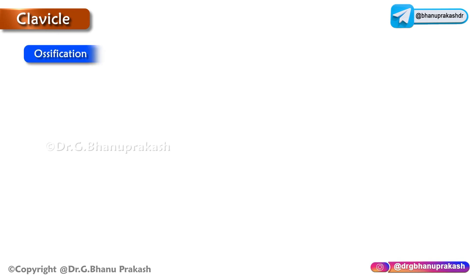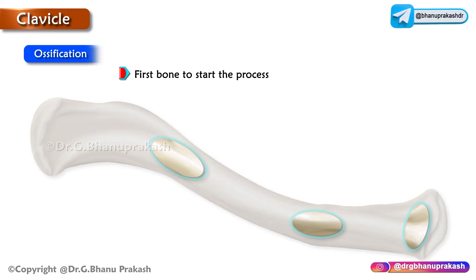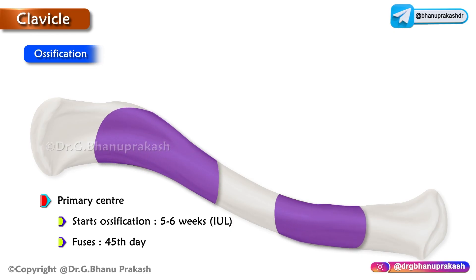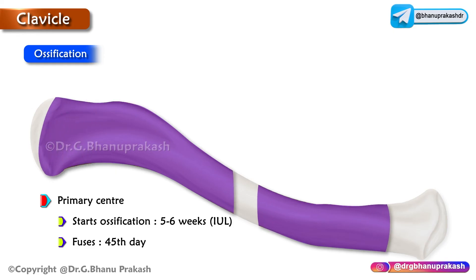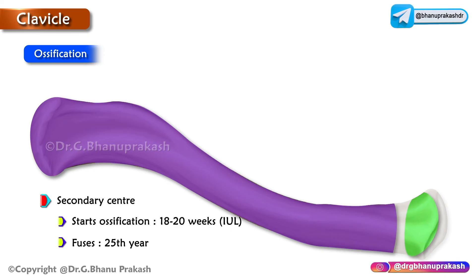The clavicle is the first bone to start the process of ossification and it ossifies from three centers. Two primary centers, located in the medial and lateral regions of the shaft, start ossification by the 5th to 6th week of intrauterine life and fuse by the 45th day. One secondary center starts ossification by 18 to 20 weeks of intrauterine life and fuses by the 25th year.